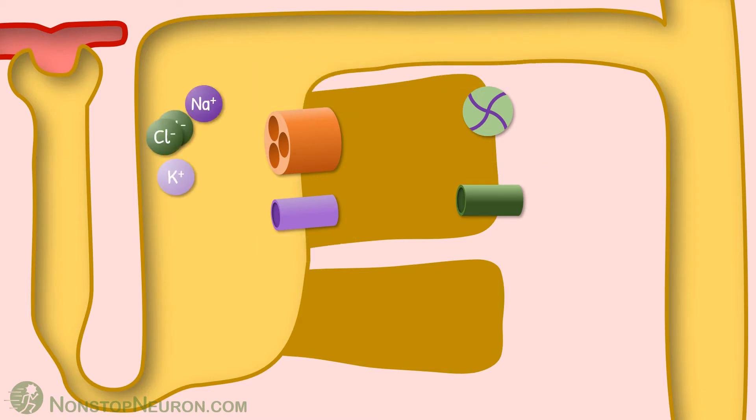In tubular fluid, we have sodium, potassium and chloride ions. This cotransporter moves 1 sodium, 1 potassium and 2 chloride from lumen into the cell. See, 2 positive and 2 negative ions are moving here, so there is no net movement of any electric charge so far.